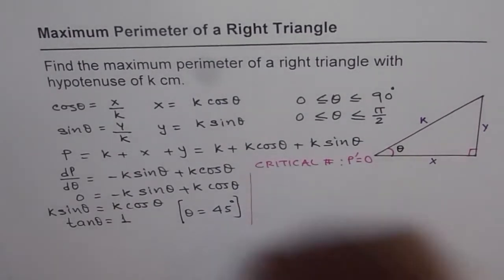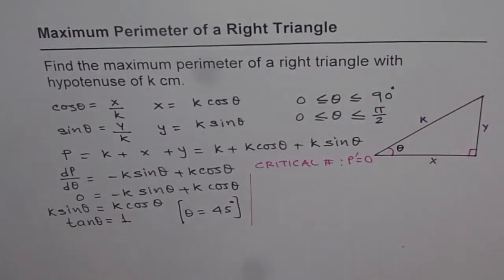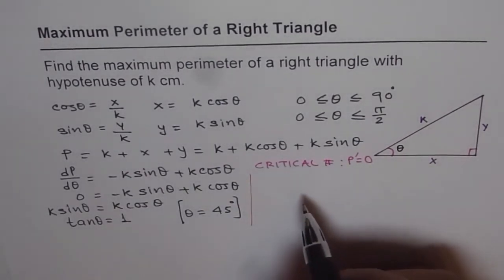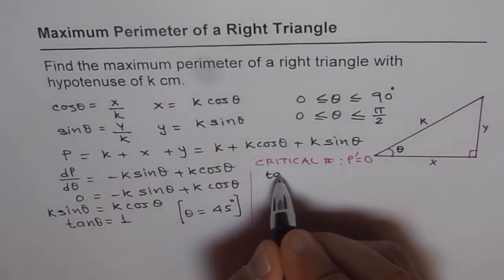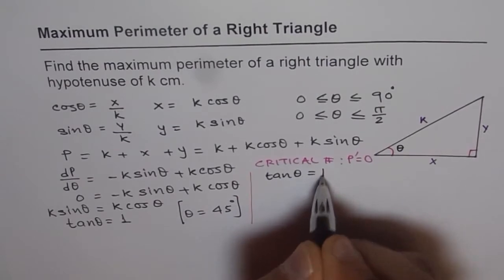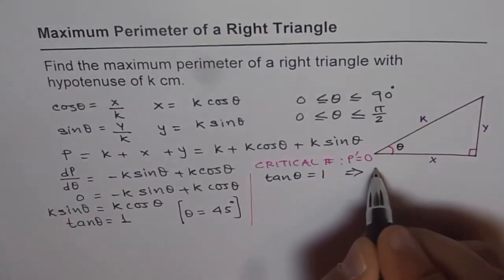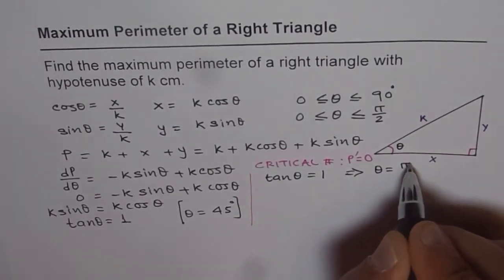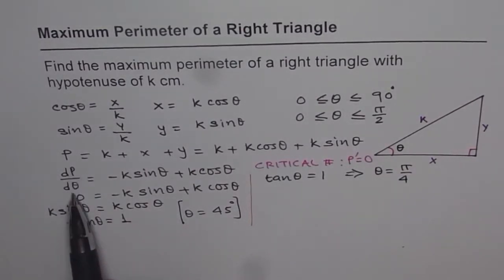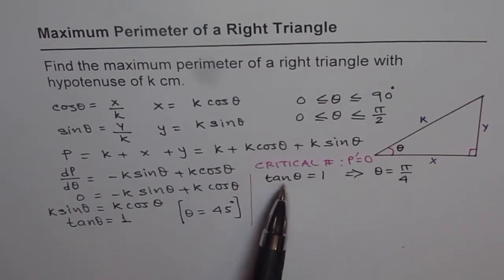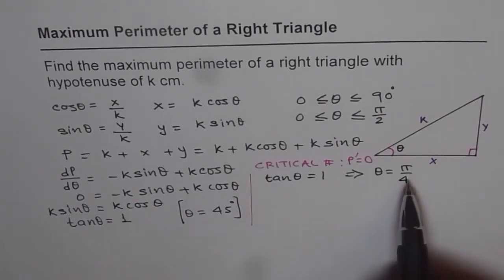Remember: when doing derivatives or calculus, we always work in radians. So tan θ = 1 implies θ = π/4. At θ = π/4, dP/dθ = 0, and that is going to maximize the perimeter.